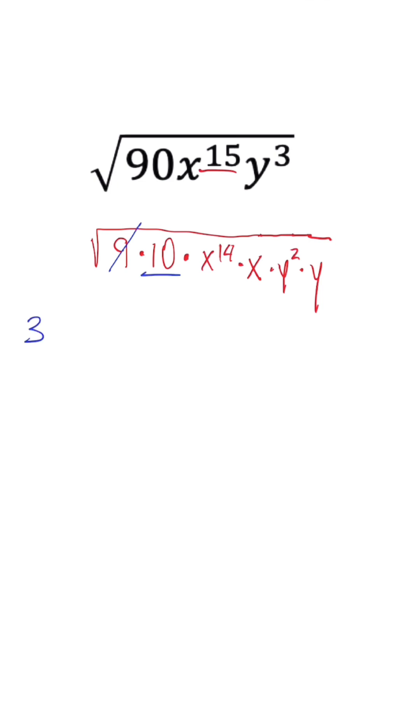x to the 14th, when we divide by 2, turns to x to the 7th. We can't simplify this x to the first power. y squared simplifies to just y, and that last y to the first power stays under the radical.